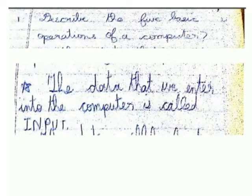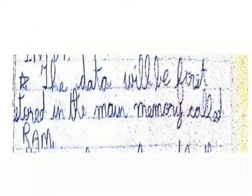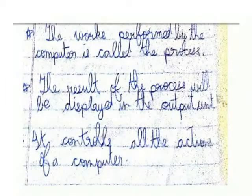We describe the five basic operations of the computer. First, the data that we enter into the computer is called input. Two, the data will be first stored in the main memory, that is RAM. Three, the work performed by the computer is called the process. Four, the result of the process will be displayed in the computer as output. Five, it controls how the actions of the computer.